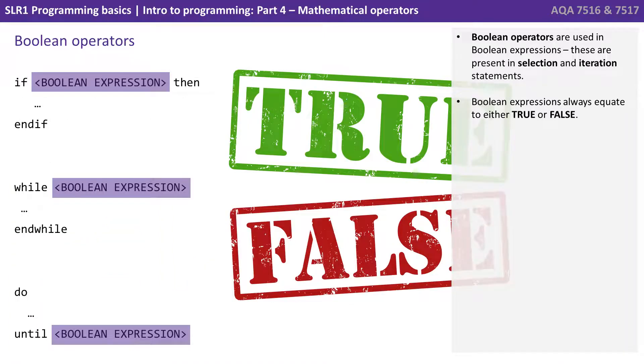So these Boolean operators are used in Boolean expressions, and these are present in selection and iteration statements. Boolean expressions always equate to either true or false. So in programming, we see things like if this Boolean expression is true, then run this code. While this Boolean expression is true, run the code in this loop. Do the following code until this Boolean expression becomes false.